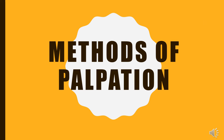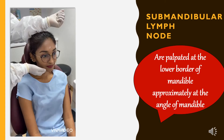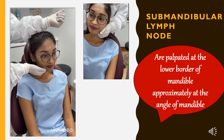Now we will move further into the methods of palpation. The first node we are going to palpate is the submental limb node, which are palpated under the chin. The next would be the submandibular limb node, which are palpated at the lower border of mandible, approximately at the angle of mandible. There is a short video showing how to palpate the submandibular limb node.